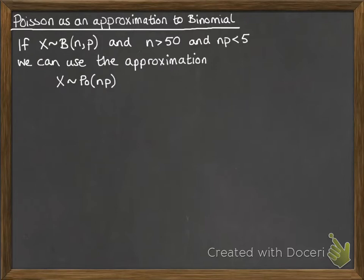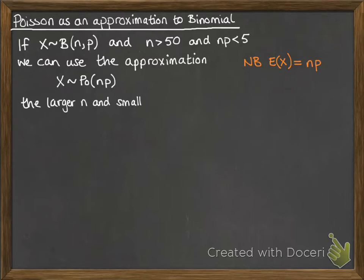We need lambda — lambda is just the average, the mean — and to work out the mean from a binomial distribution, you do n times p. This works as long as n is big enough and p is small enough, but the bigger n is and the smaller p is, the better the approximation works.